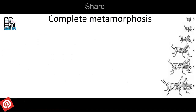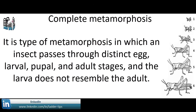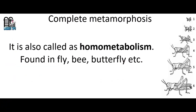Complete Metamorphosis is a type of metamorphosis in which an insect passes through distinct egg, larval, pupal, and adult stages, and the larva doesn't resemble the adult. It is also called holometabolism.